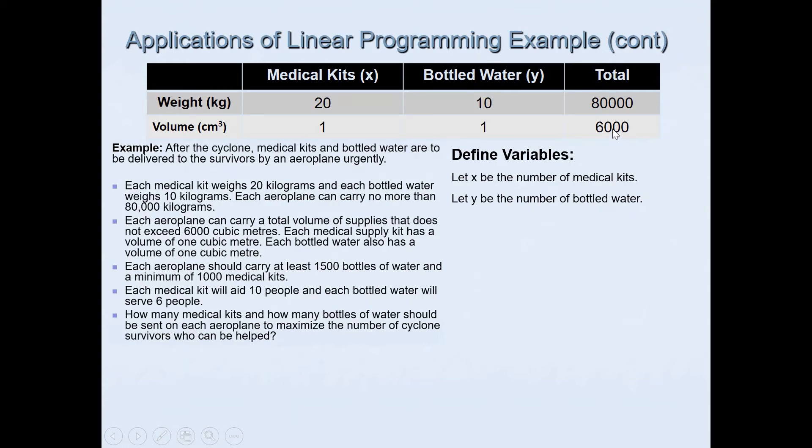That's why the total is 6,000 or less. And then 20 was the weight for medical kits, and 10 kilograms for the water bottle. So that's how I did the table there. You don't need to do that, but first things first, you need to define the variables.